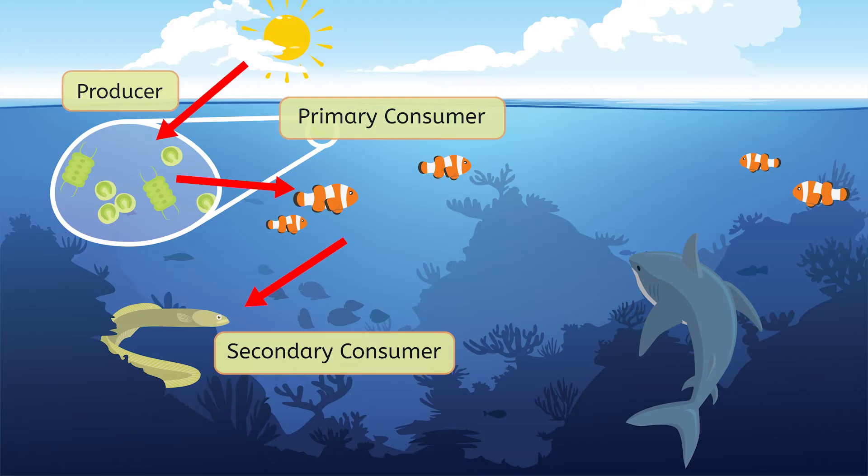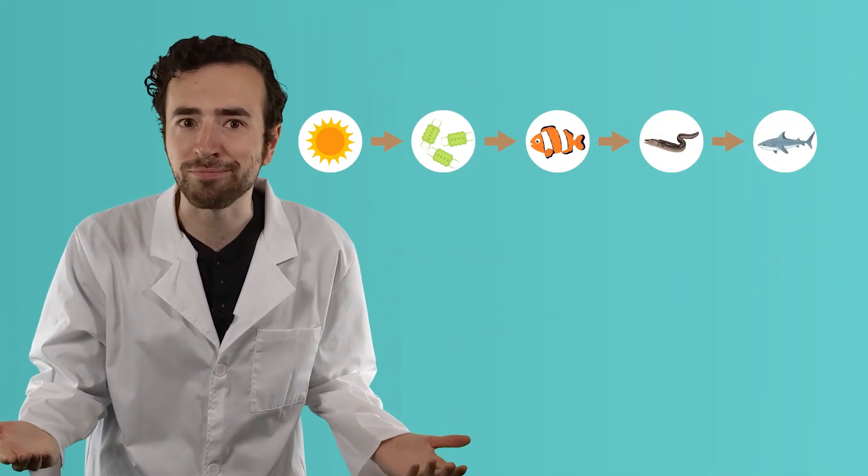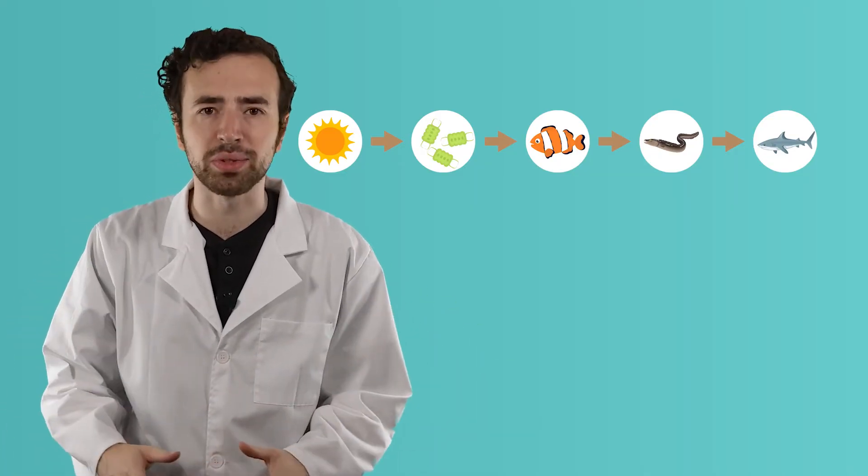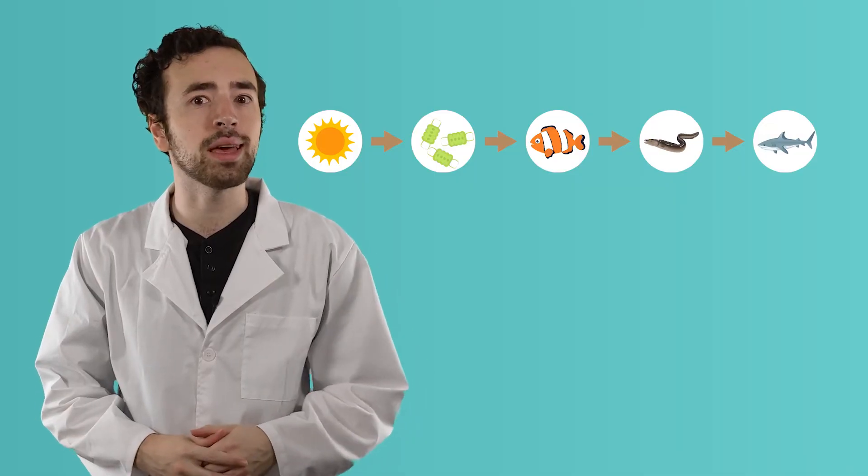The eel might then be eaten by a shark. There's nothing in this ecosystem that'll try to eat a shark. So, the shark is at the top of this food chain. That makes it a tertiary consumer. And we've made a food chain. This model makes it simple to see how energy flows from the sun to the living things in an ecosystem.